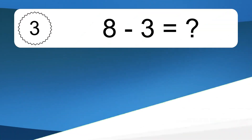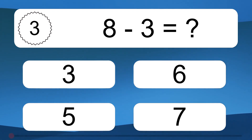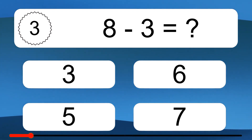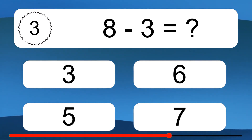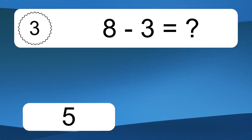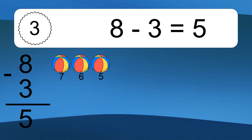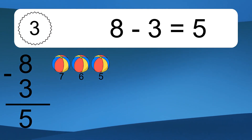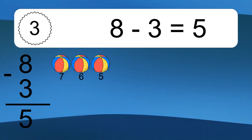8 minus 3 equals what? 8 minus 3 equals 5. Let's count it: 7, 6, 5.